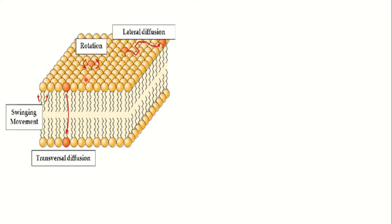The third movement is transverse diffusion, also called flip-flop, where the lipid molecule jumps from one monolayer to the other. This is facilitated by enzymes like scramblases and flippases. The fourth movement is vibrational movement, where the fatty acid tail can vibrate. So lipids show 4 types of diffusion or movement.